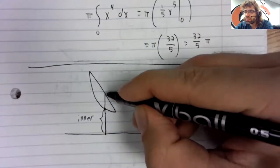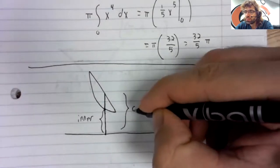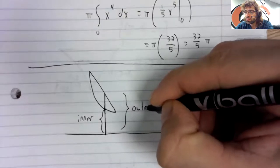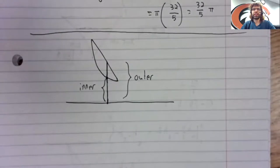And you keep going until you're through the region. And that's your outer radius.